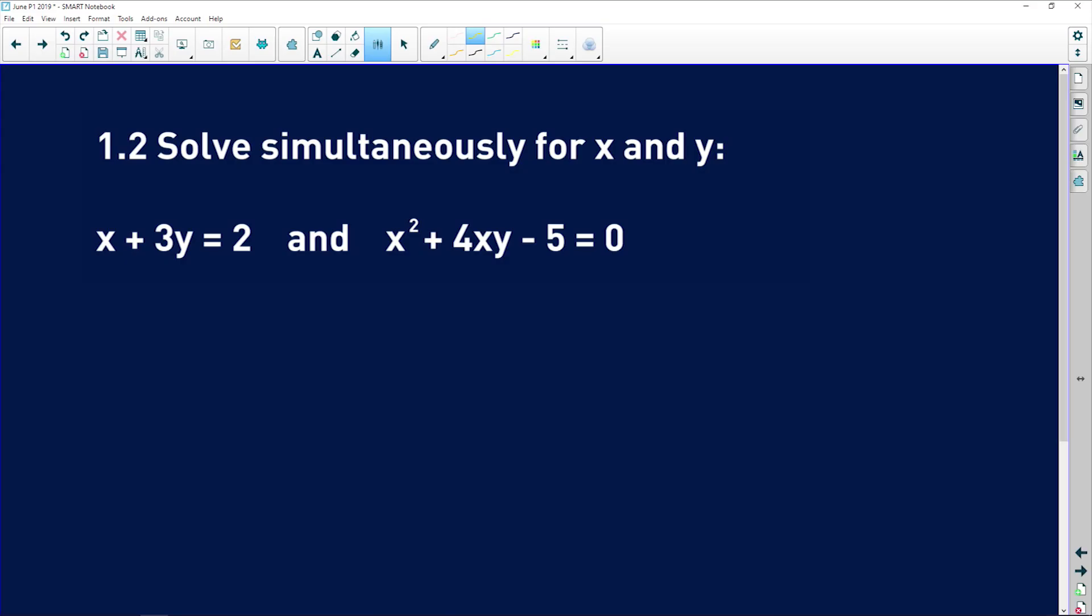So let's take a look at this question. It says solve simultaneously for x and y. I'm going to express this first equation in terms of x. So if I subtract 3y from both sides, I get x is equal to 2 minus 3y.